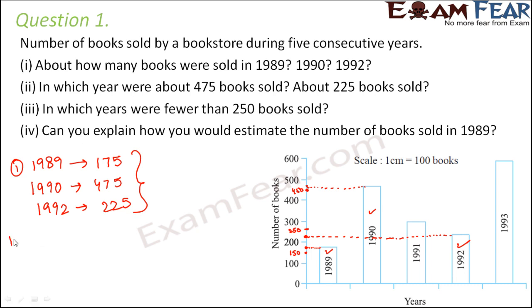Second question: In which year were about 475 books sold and about 225 books sold? That's pretty simple because we just now calculated that 475 and 225 books were sold in the years 1990 and 1992 respectively.